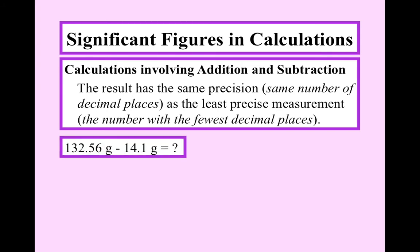We have 132.56 minus 14.1. By the way, notice that these numbers have units. G stands for grams. In chemistry, we don't have any naked numbers. So, you always need to include your units. So, the people that are reading your measurements know what you're talking about. Which of those two numbers has the least number of decimal places? Is it the one on the left or the one on the right? Correct, it's the one on the right.